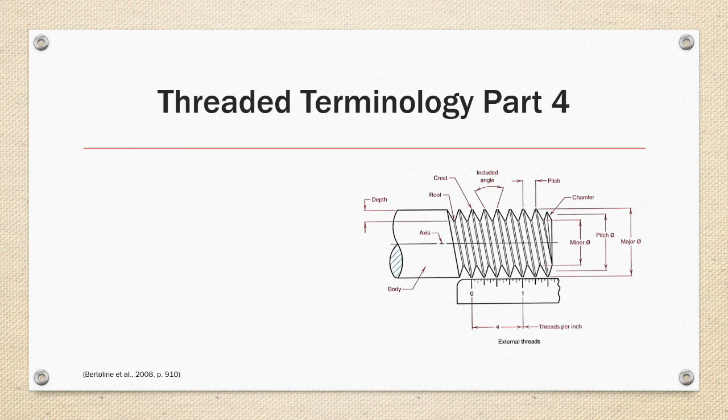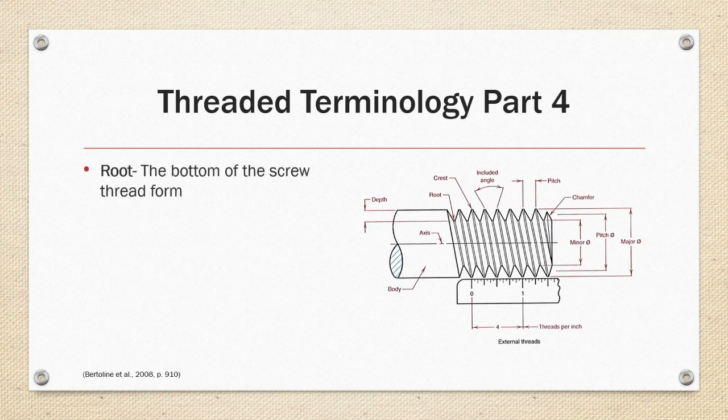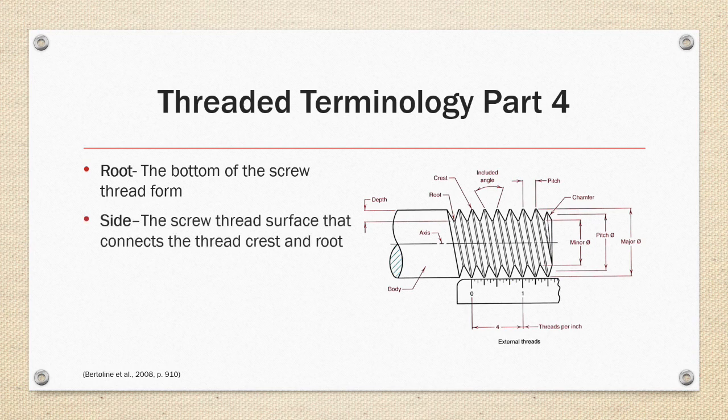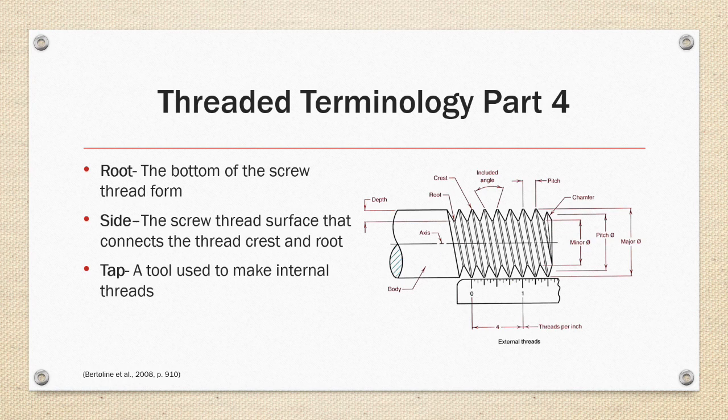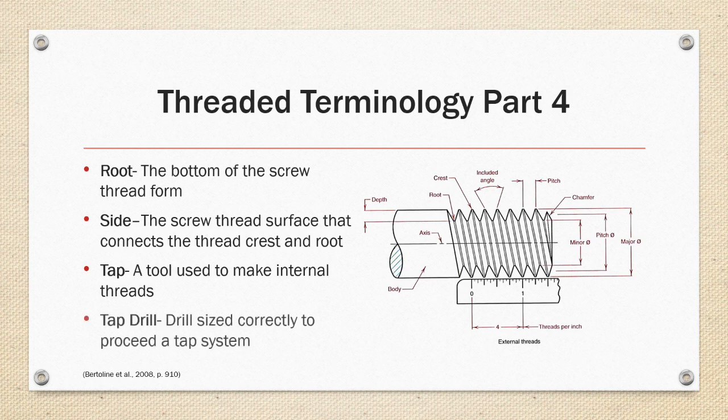Thread terminology part four. The root is the bottom of the screw thread form. The side is the screw thread surface that connects the thread crest and the root. Tap, a tool used to make internal threads by either cutting or forming the material. Tap drill is a drill size correctly sized to precede a tap system.